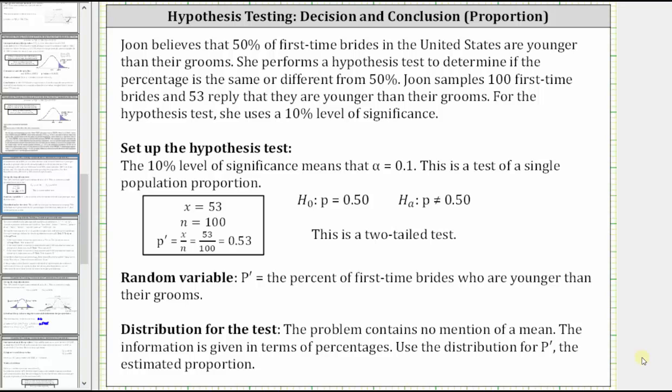Welcome to an example of a one-sample hypothesis test for a proportion. June believes that 50% of first-time brides in the United States are younger than their grooms. She performs a hypothesis test to determine if the percentage is the same or different from 50%. June samples 100 first-time brides and 53 reply that they are younger than their grooms. For the hypothesis test, she uses a 10% level of significance.